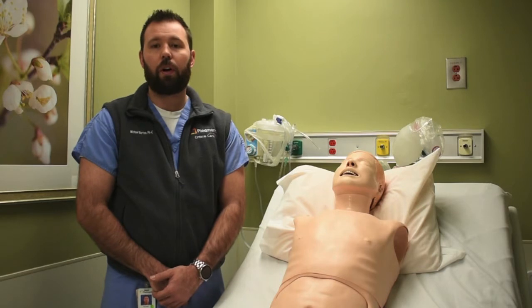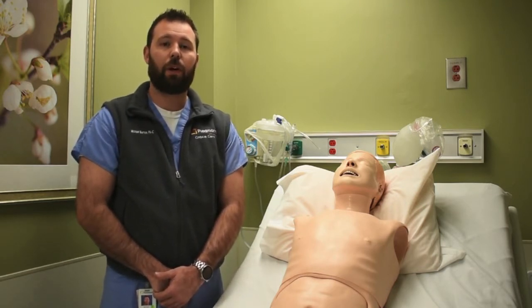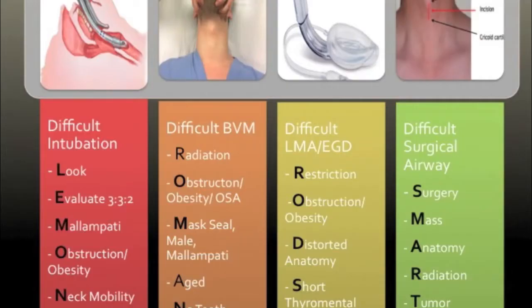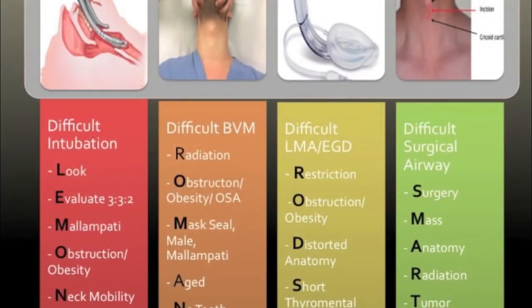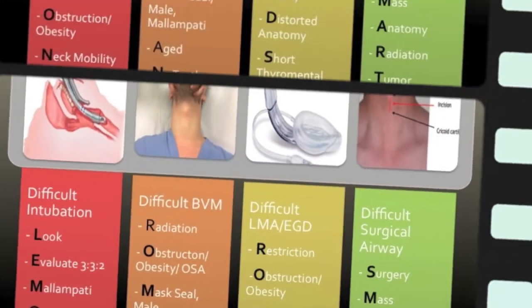Please check out our video on formulating a good intubation plan, but for now we're going to dig into the difficult airway predictors. The memory aid for difficult intubation or laryngoscopy predictors is LEMON. L stands for look — use your gestalt and look at the patient. Do they look like they're going to be a difficult intubation? E stands for evaluate 3-3-2: three fingers in the mouth, three finger breadths under the chin, and two finger breadths of thyromental distance. Less than these distances and the patient likely has an anterior airway.